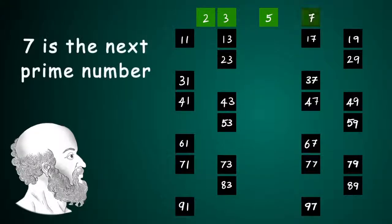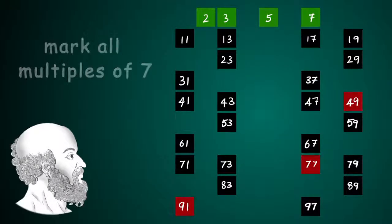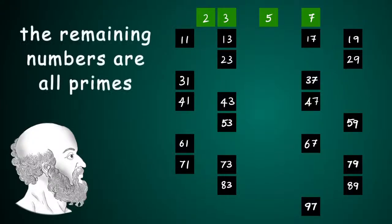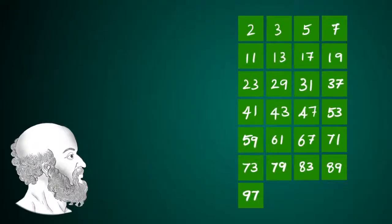Similarly, the next one turns out to be 7. Highlight 7, identify multiples of 7 and then delete them. And if we carry on in this way we find that all remaining numbers turn out to be prime numbers less than or equal to 100.